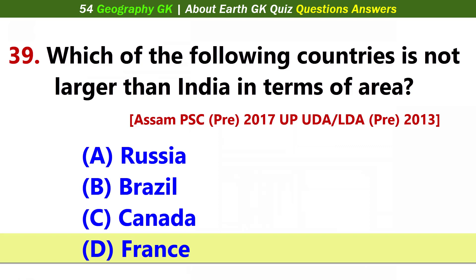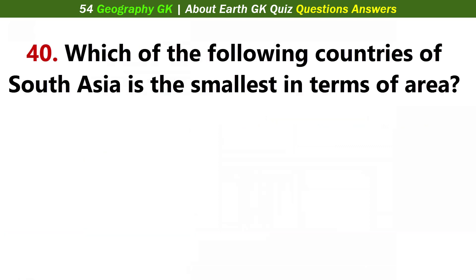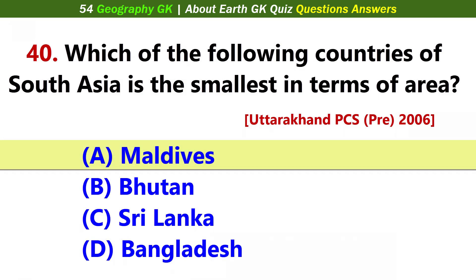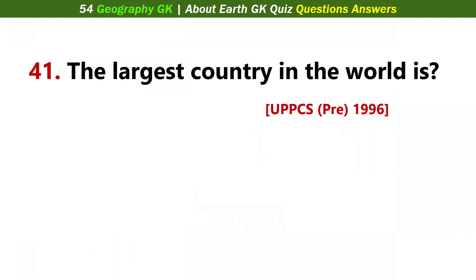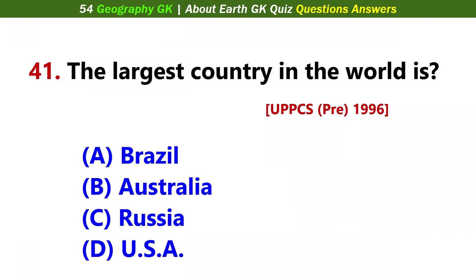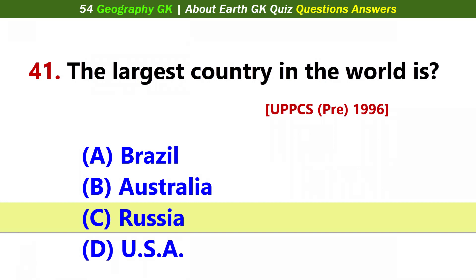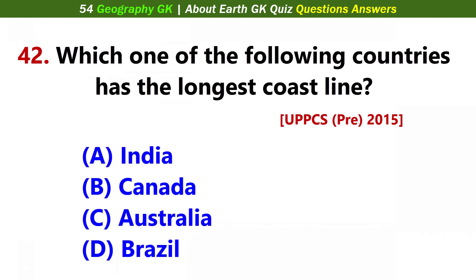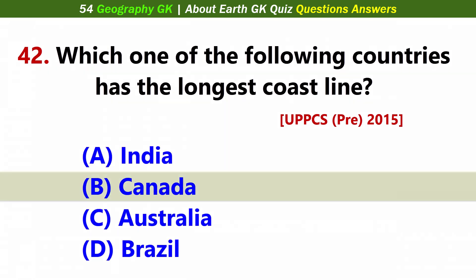Which one of the following countries is not larger than India in terms of area? Answer D: France. Which one of the following countries of South Asia is the smallest in terms of area? Answer A: Mauritius. The largest country in the world is? Answer D: Russia. Which one of the following countries has the longest coastline? Answer B: Canada.